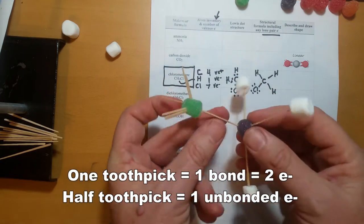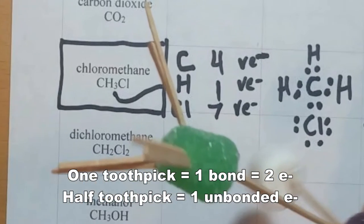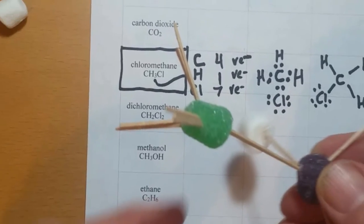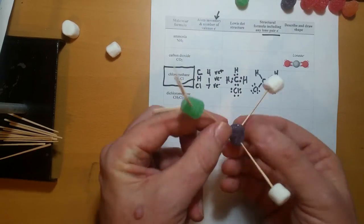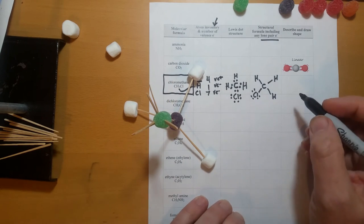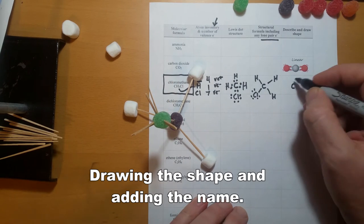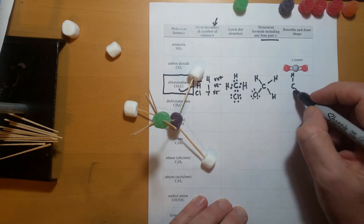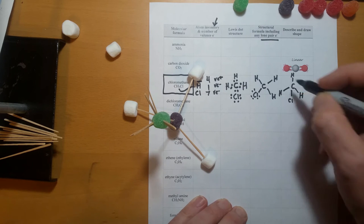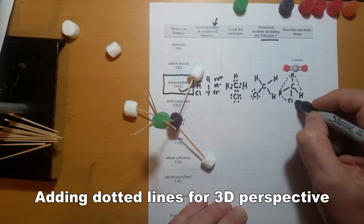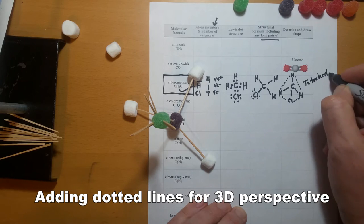Now we can see the chlorine atom's three lone pairs and the tetrahedral shape of our overall molecule. We can add some dotted lines to our drawing to create perspective.